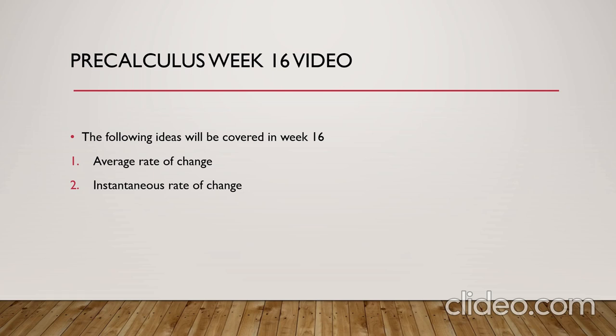So if we want to relate the slope that you already know with the average rate of change, we will say that the average rate of change is the slope of the secant line that joins any two points on the function.